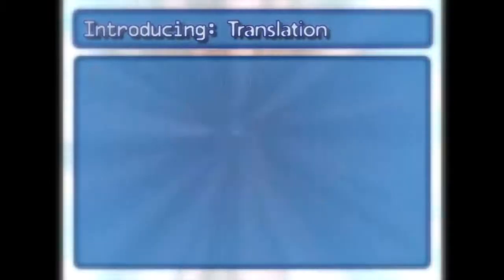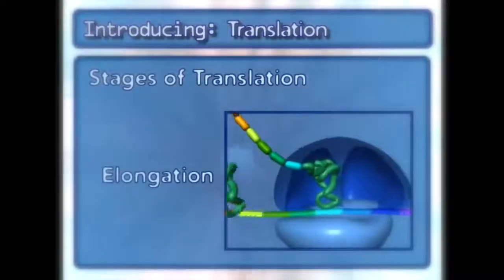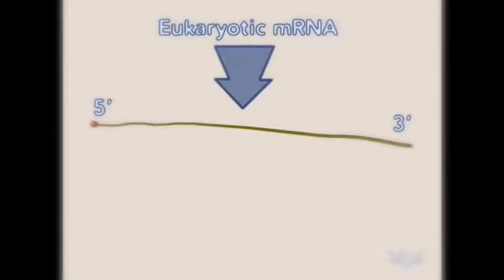The process is broken into three stages: initiation, elongation, and termination. Let's see the process in action. Eukaryotic mRNA, the substrate for translation, has a unique 3' end called the poly-A tail.